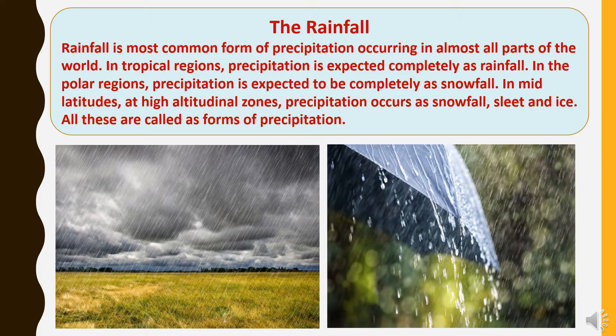Rainfall is the most common form of precipitation, occurring in almost all parts of the world. In tropical regions, precipitation is expected completely as rainfall. In the polar regions, precipitation is expected to be completely as snowfall.